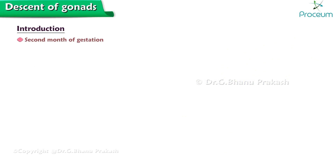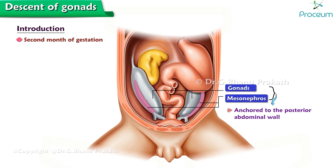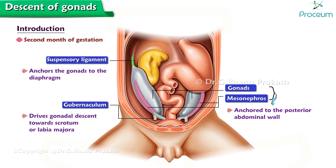By the end of the second month of gestation, the gonads and the mesonephros are anchored to the posterior abdominal wall. With the degeneration of the mesonephros, the remaining mesentery forms the cranial suspensory ligament and the gubernaculum. The cranial suspensory ligament anchors the gonads to the diaphragm, and the gubernaculum drives their descent towards the scrotum or the labia majora, the derivatives of the genital swellings.